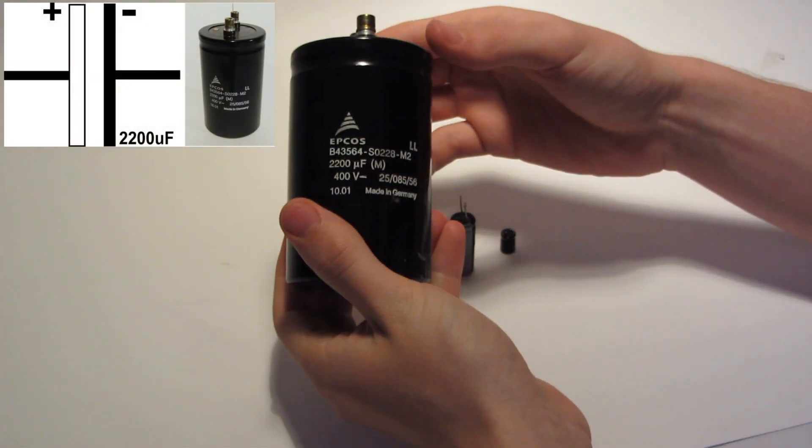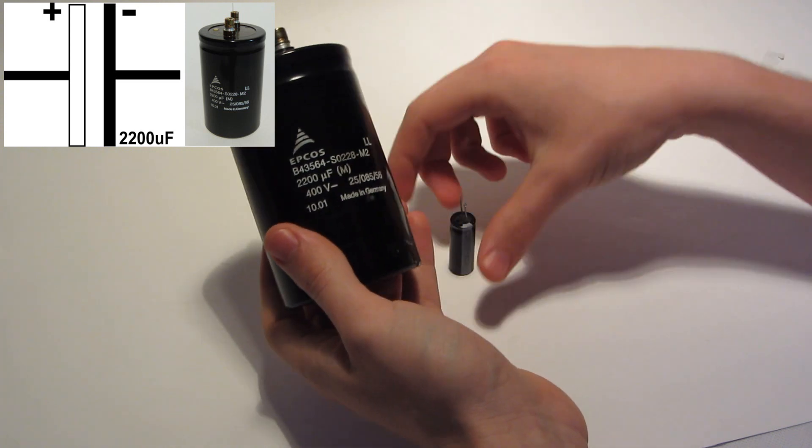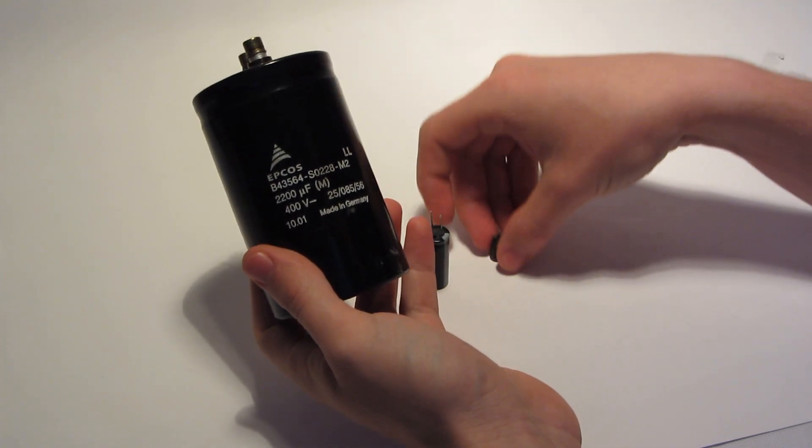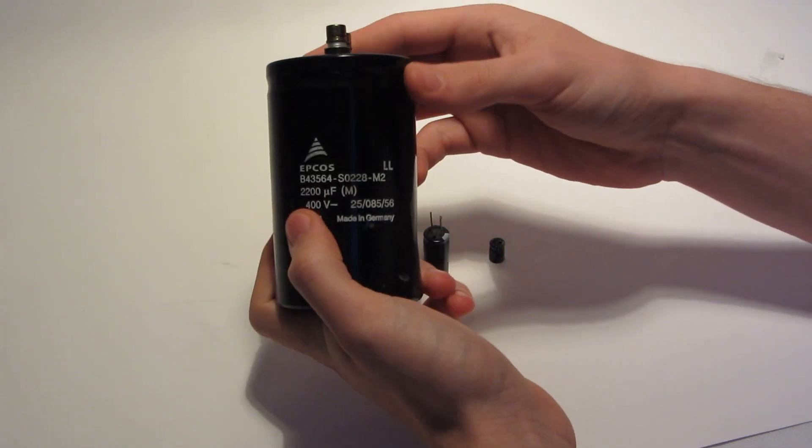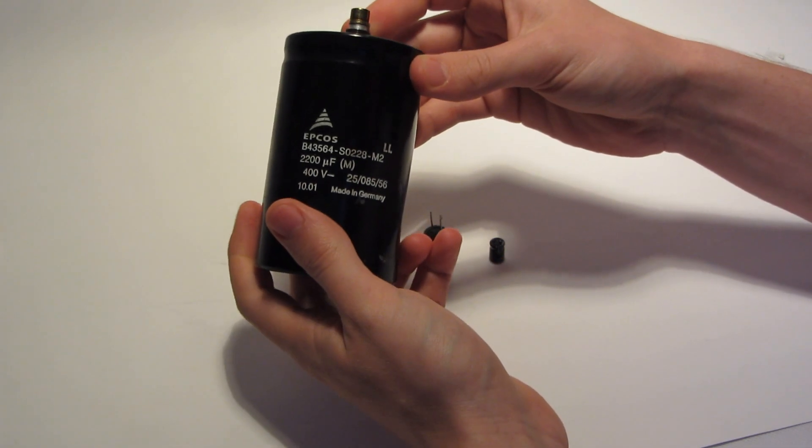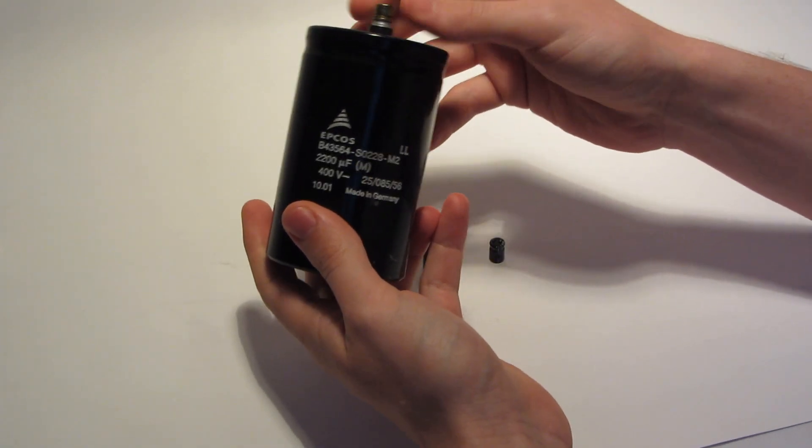As you can see, capacitors come in different sizes and capacities and voltages, from small to big. Why do we use a capacitor? Because a capacitor can provide a very high current for a very short time, unlike a battery.